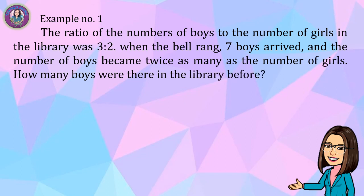We are looking for the number of boys before seven boys arrived. Given: the ratio of 3 to 2, seven boys arrived, and after their arrival the number of boys became twice as many as the number of girls. We can solve the problem by using the before-and-after model.